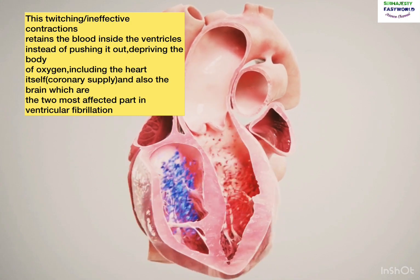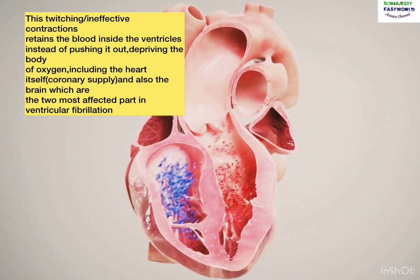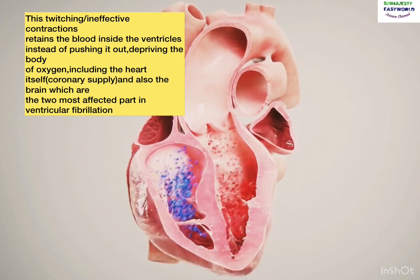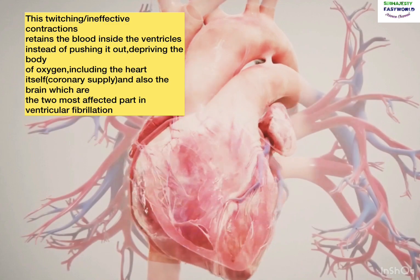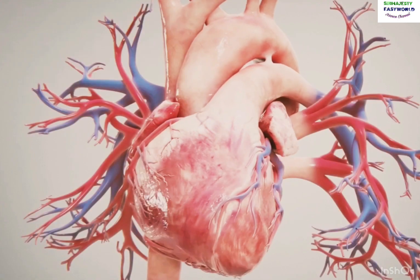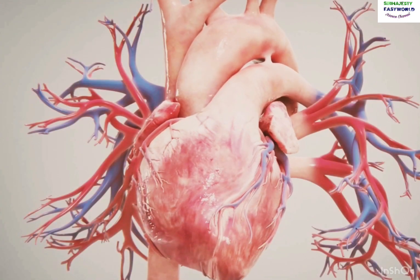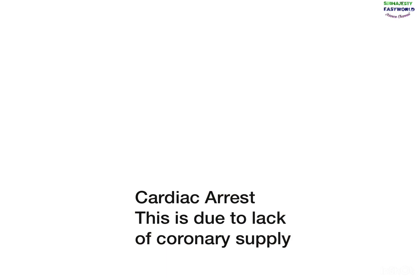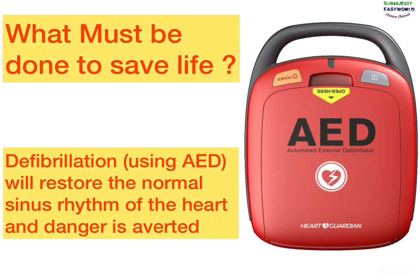In ventricular fibrillation, the blood is retained inside because the quivering is not enough to push the blood out from the ventricles. This will deny the supply of blood to the whole body, including the coronary system, and that will lead to cardiac arrest.